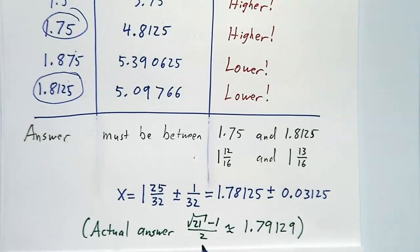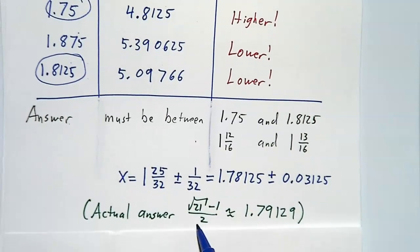Now the actual answer, you can get it from the quadratic formula, and it's about 1.79. And our few guesses, we got it down to about 1.78. And it was actually 1.79. Pretty close.